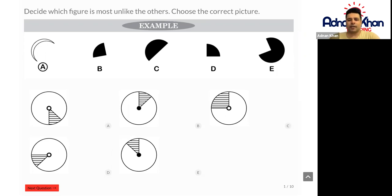So first of all it says decide which figure is most unlike the others and then choose the correct picture. In this case we have a, b, c, d, and e, so we have five different examples. Which particular answer is completely unlike all the others?